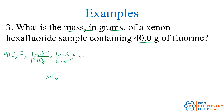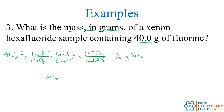Now I'm in moles of xenon hexafluoride, and I want mass, so I use molar mass. Finding 1 xenon and 6 fluorines and adding those together gives a molar mass of 245.29 grams per mole of xenon hexafluoride. Multiplying through, with 3 significant figures being the fewest, the answer is 86.1 grams of xenon hexafluoride — that's the mass of xenon hexafluoride that contains 40.0 grams of fluorine.